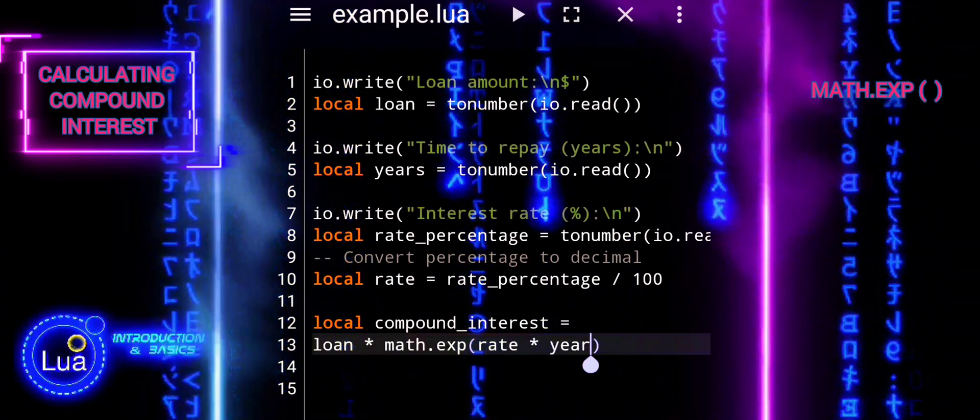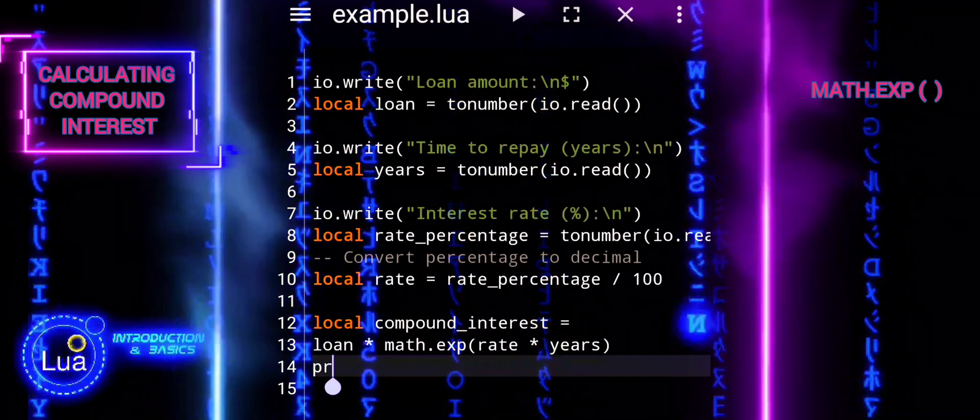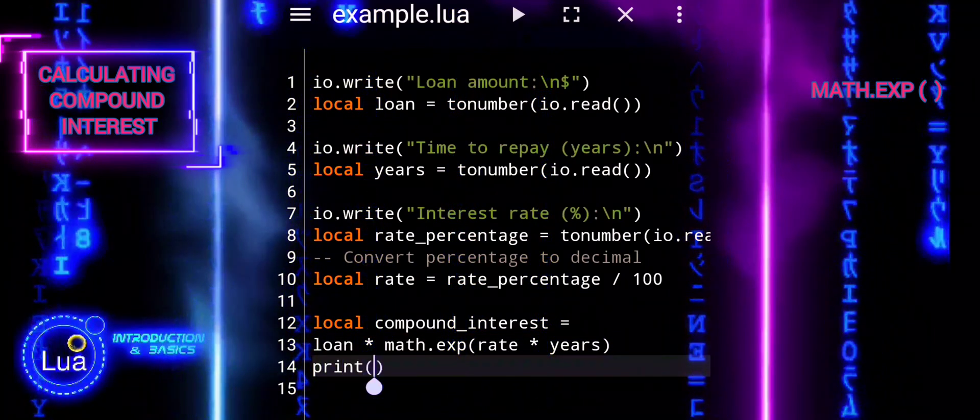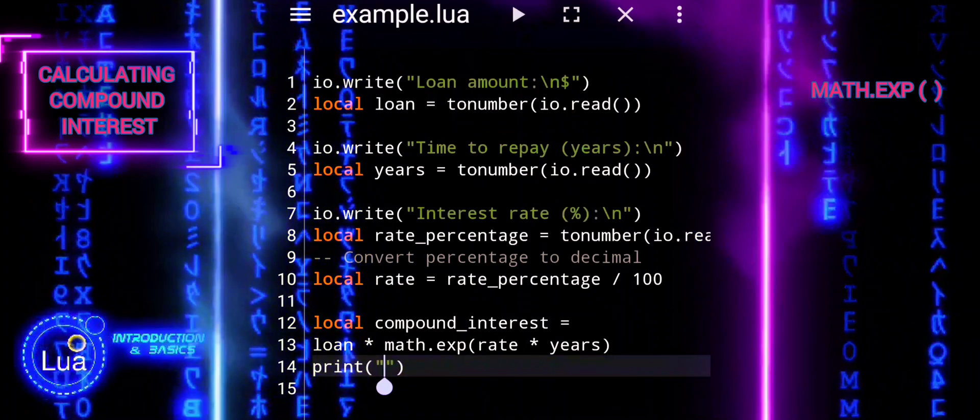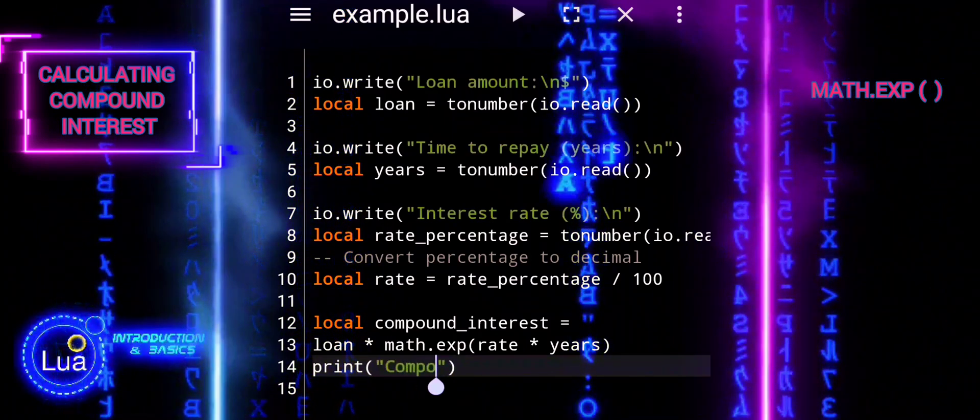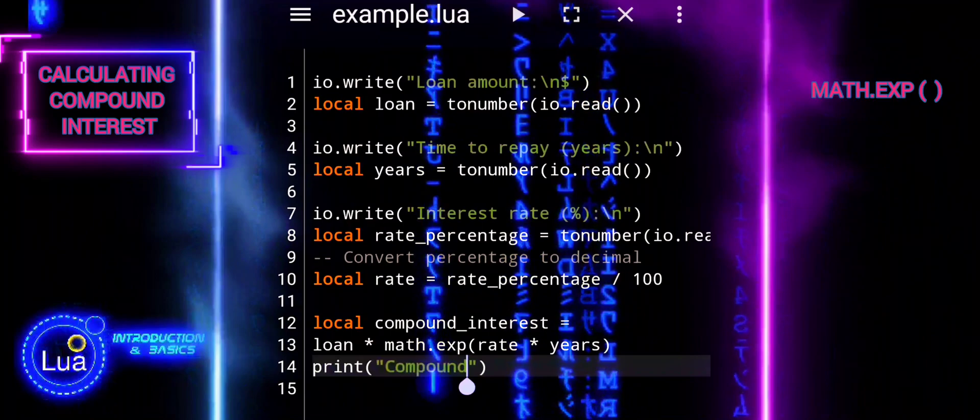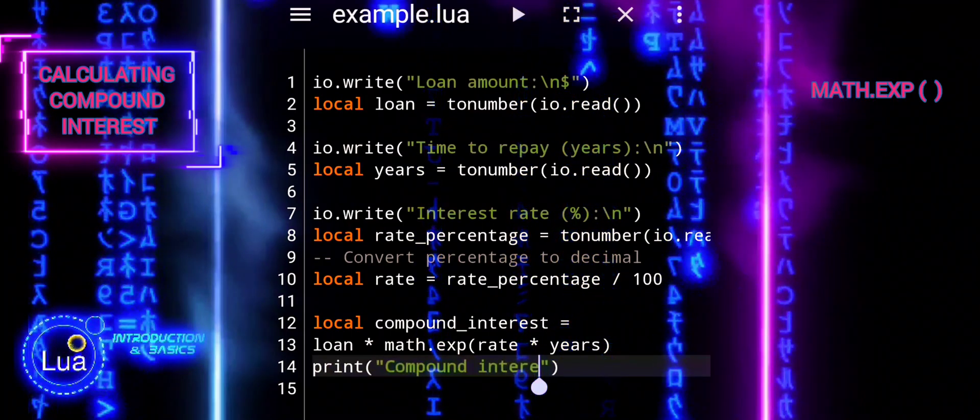This exponential calculation represents the growth of the loan amount over time due to compounded interest. The resulting compound interest value is stored in the variable compound_interest and then printed to the console with an appropriate message.